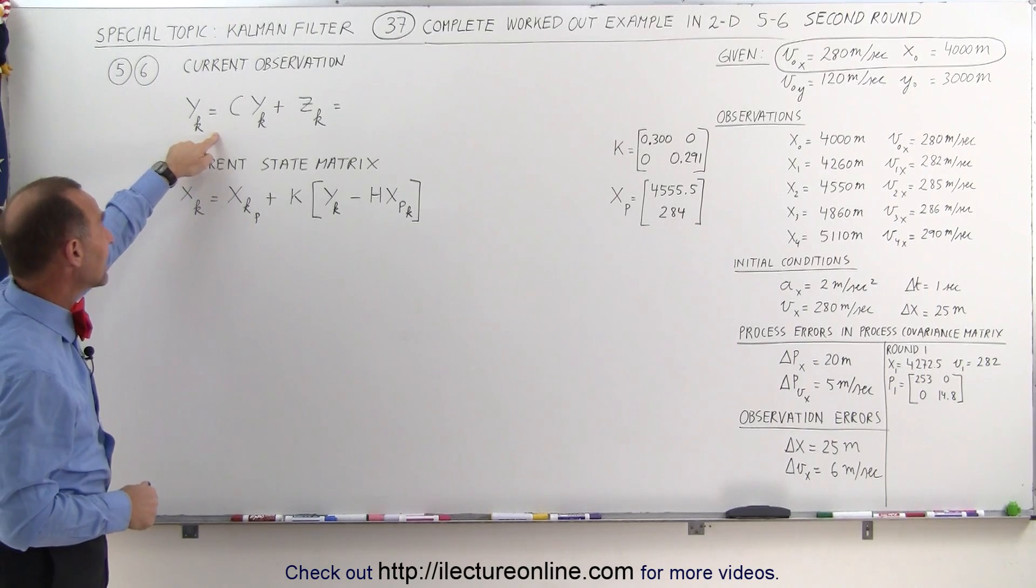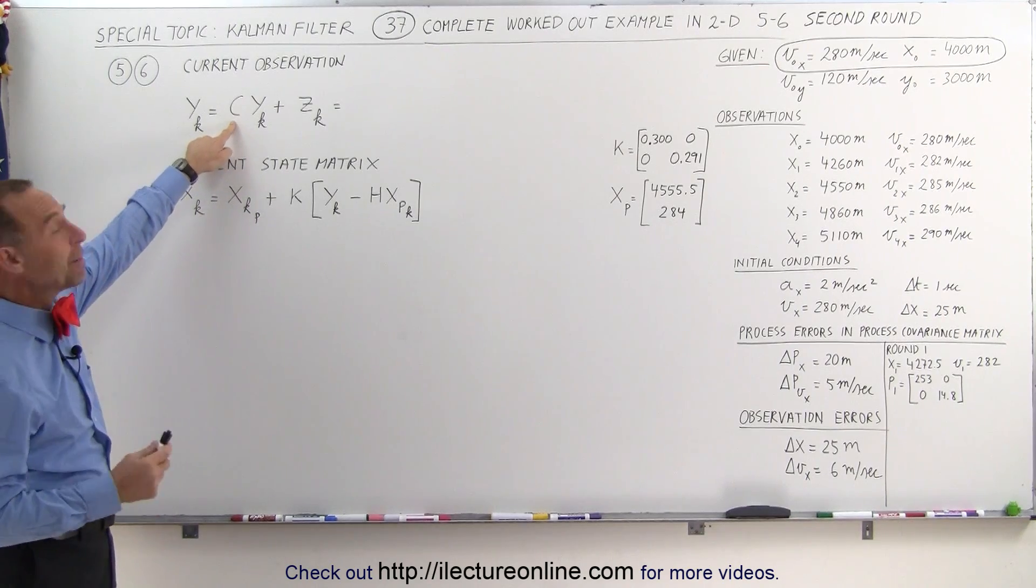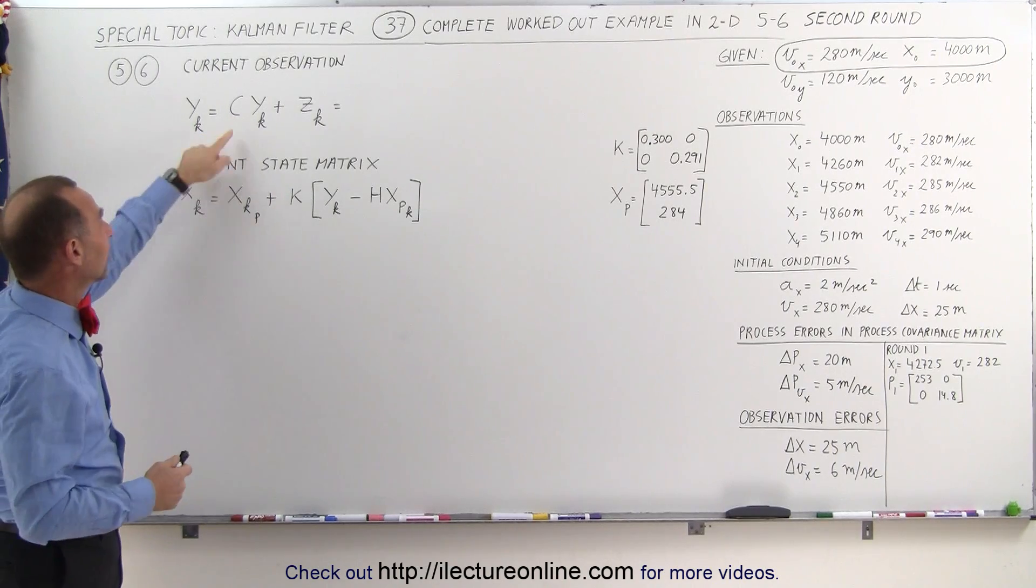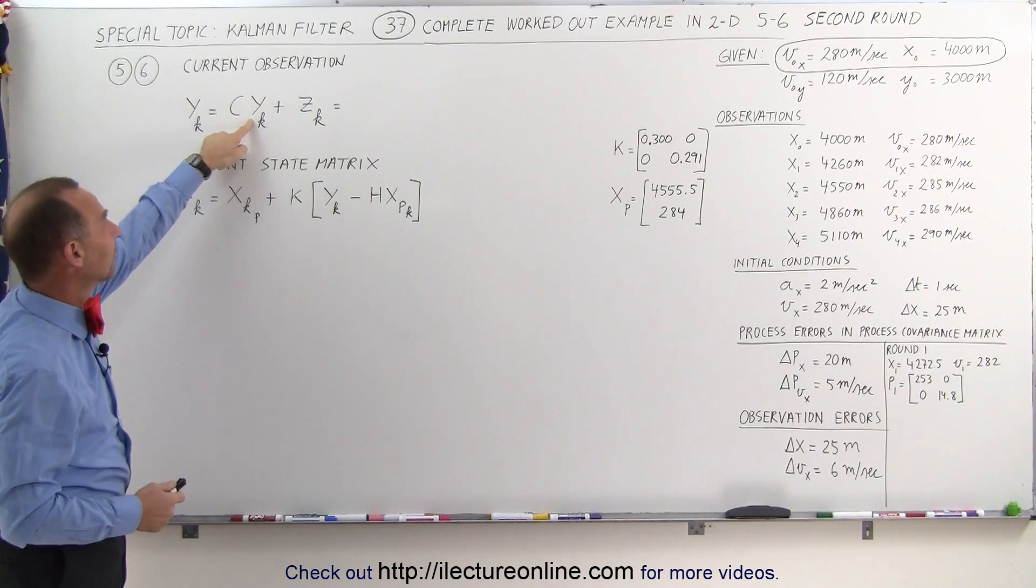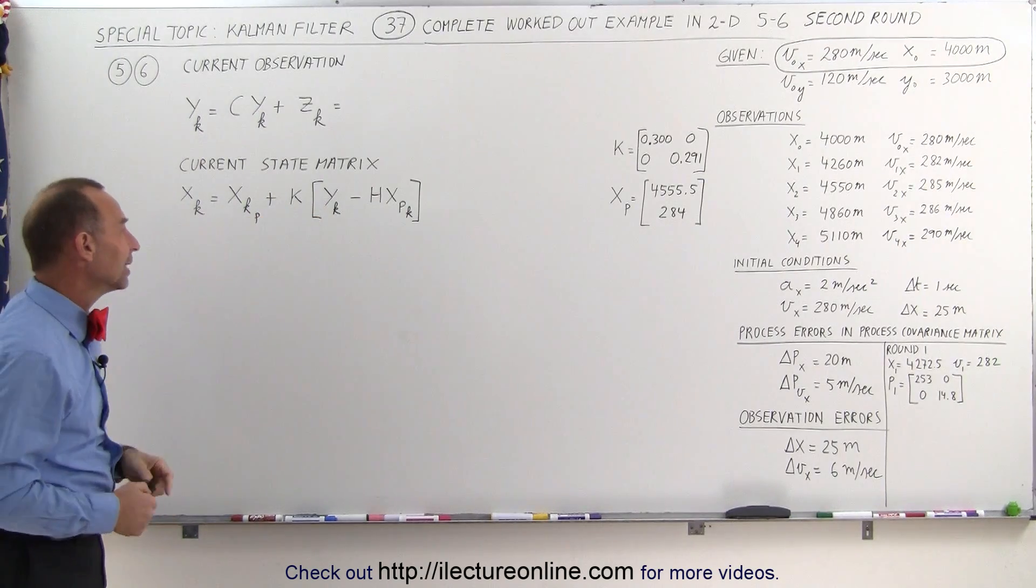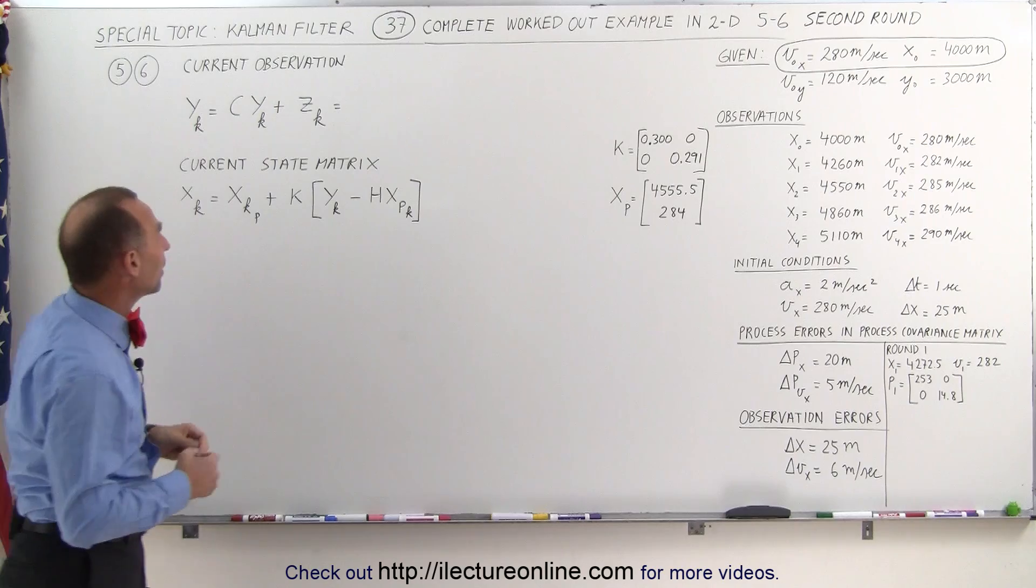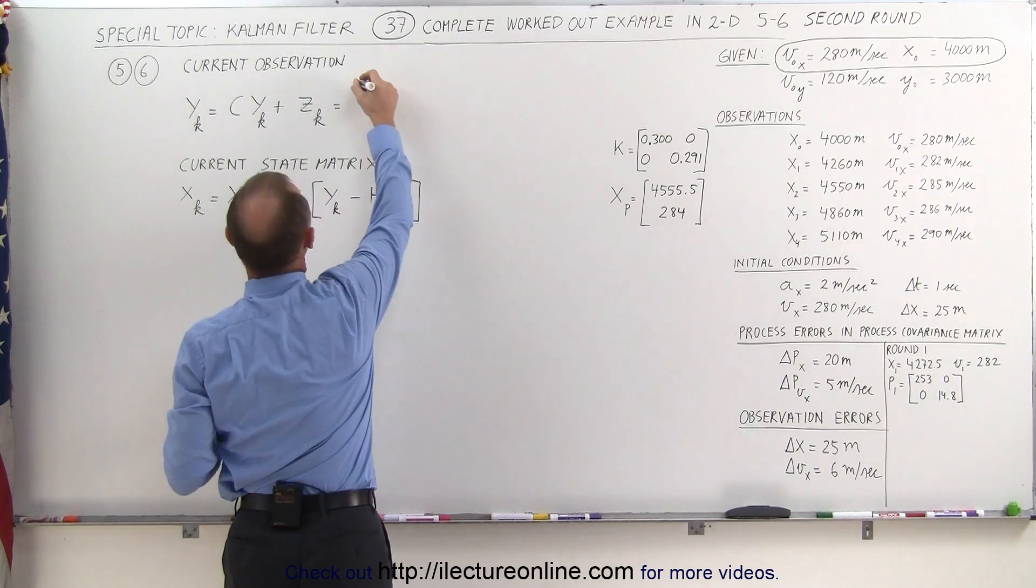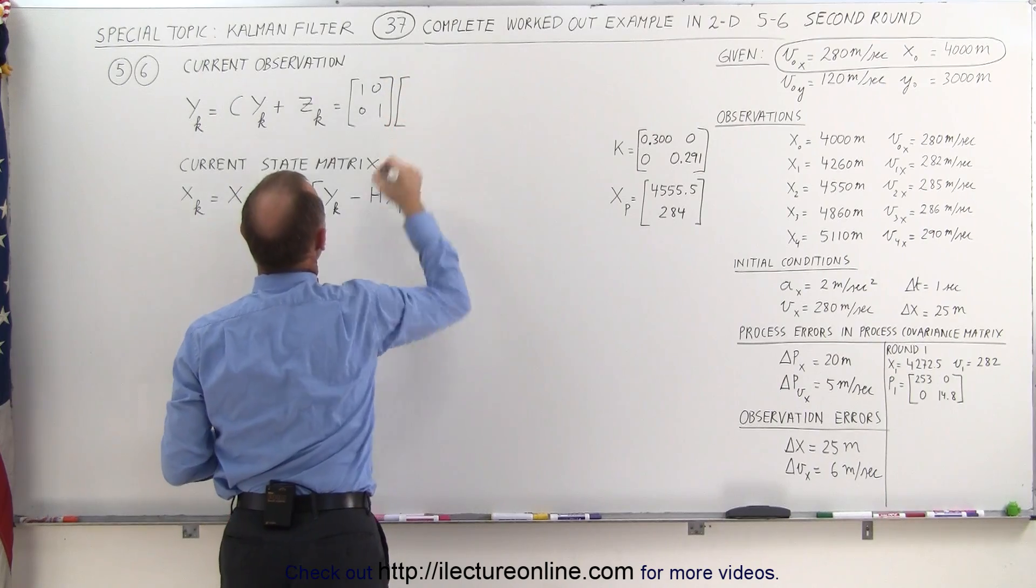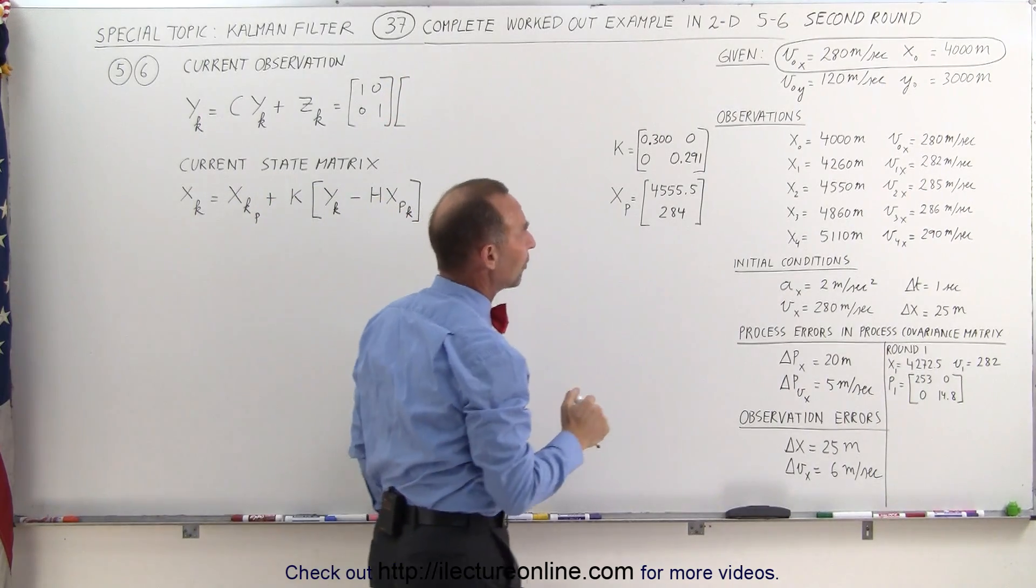First, we need to take in the observation. Again, we have a C matrix there, which in this case is simply going to be the identity matrix because this is only meant to convert this matrix into the correct matrix to put it right here and have it match the Kalman gain matrix. So here we have no problem. We can simply multiply the identity matrix times the new observation matrix, the Y matrix, the new observation.